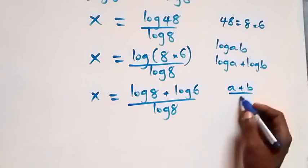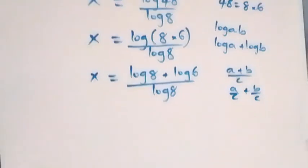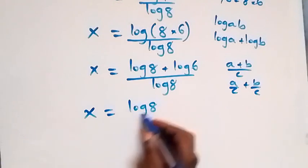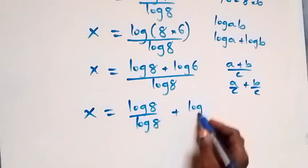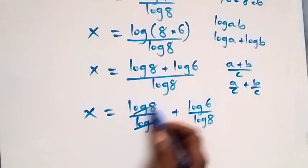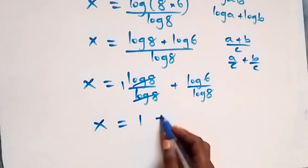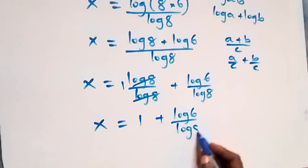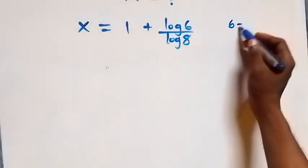So we have x equals log 8 over log 8 plus log 6 over log 8. Here log 8 over log 8 cancels to give 1, so we have x equals 1 plus log 6 over log 8.